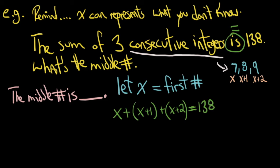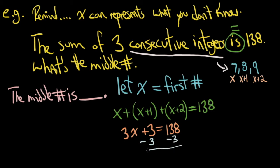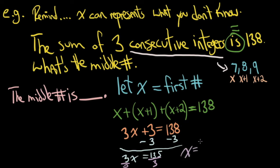Now we have a regular equation to solve. Let's combine like terms. I see three x's and three constants, and that equals 138. So 3x + 3 = 138. I'm going to subtract 3 from both sides, getting 3x = 135. Then divide both sides by 3, and x equals 45.